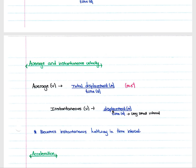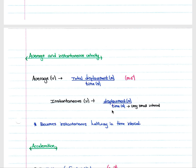Average velocity is measured over a large interval: total displacement in meters divided by time, measured in meters per second — remember to include direction. Instantaneous velocity shows the velocity of an object at a particular instant, calculated using displacement over a very small time interval. If your time period is six seconds, your velocity becomes instantaneous halfway through, at three seconds.